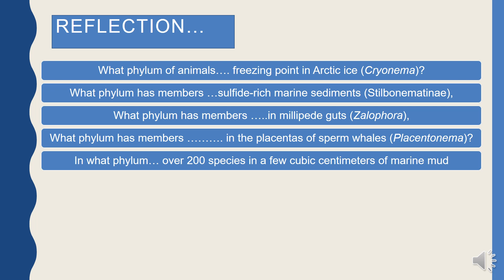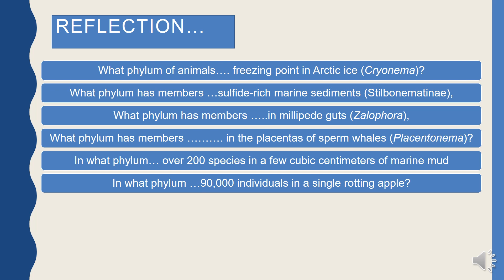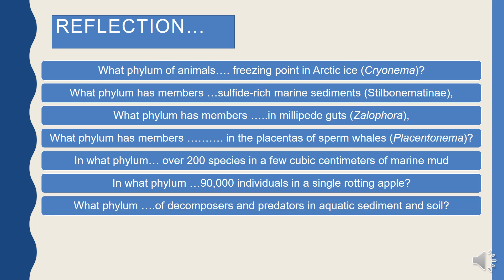What phylum has over two hundred species living in a few cubic meters of marine mud? And which phylum has 90,000 individuals found in a single rotting apple? So what phylum is this — which is decomposer, predator, parasite, free-living?